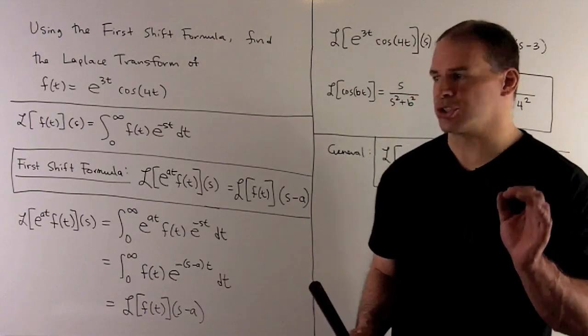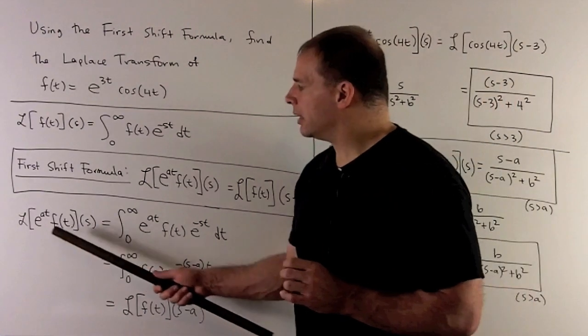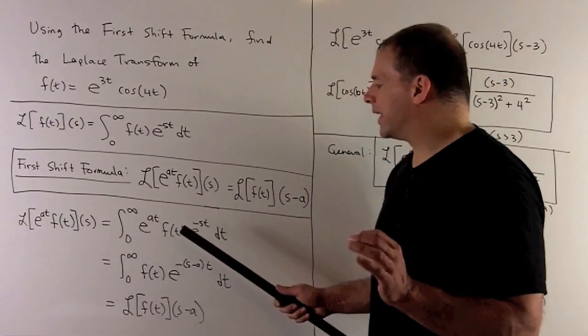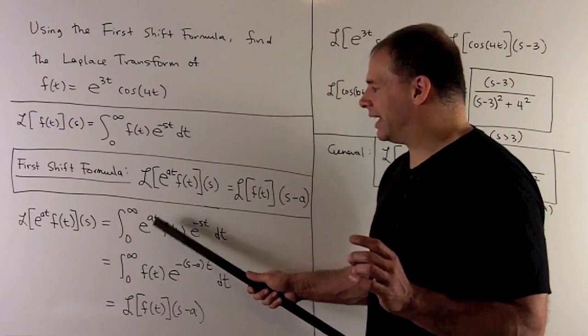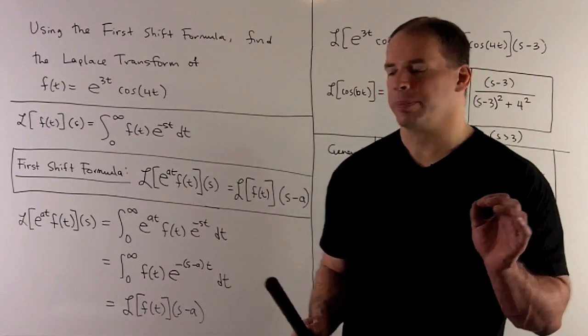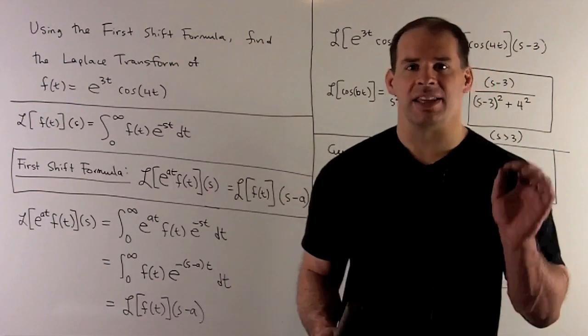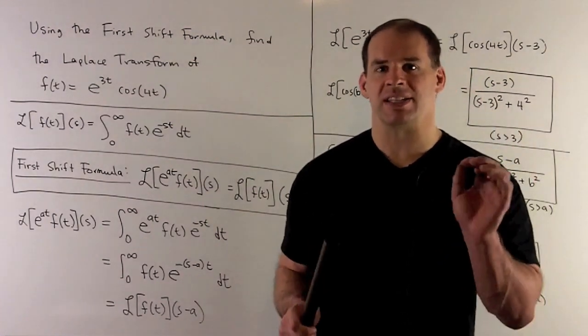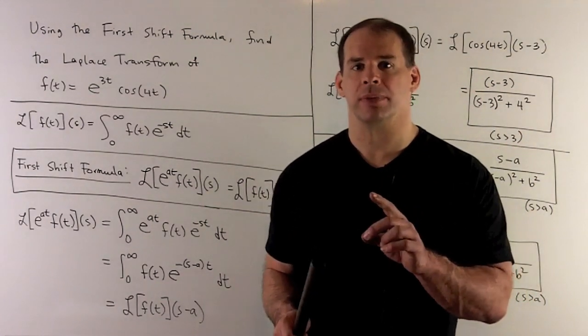Why is this true? Let's write our definition and follow our nose. We have e^(at) times e^(-st), and we can combine the exponents. That gives us e^(at - st), or e^(-(s-a)t).